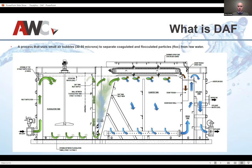Starting again with the flocculation, we go through two different stages: a slow mix and a rapid mix. Then we go through the saturators, which blow air up through the cell. You've got your skimmer coming off the top, which takes everything coming up off the froth through the skimmer. And you've got your effluent water going down below.